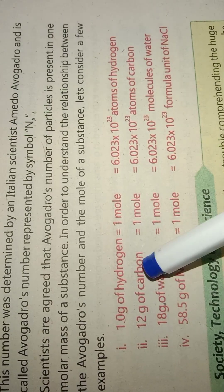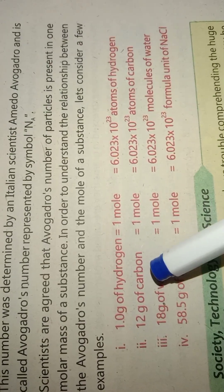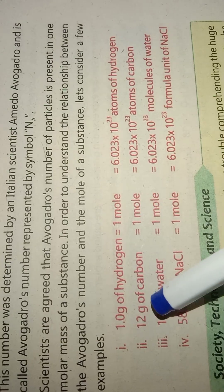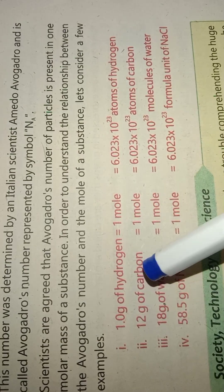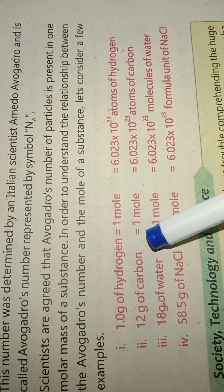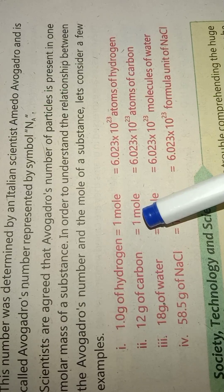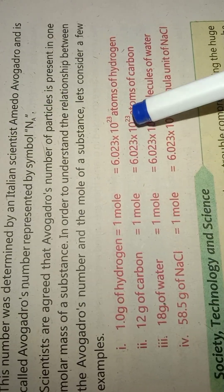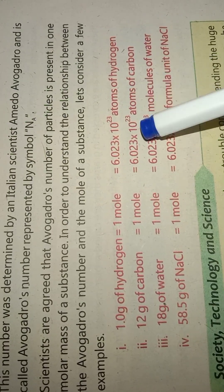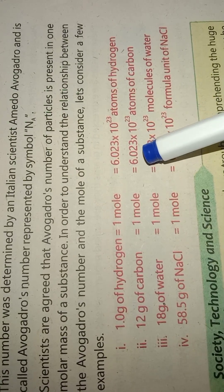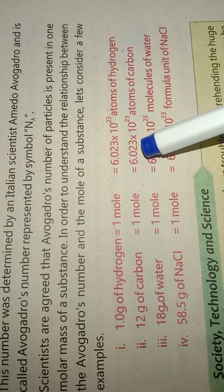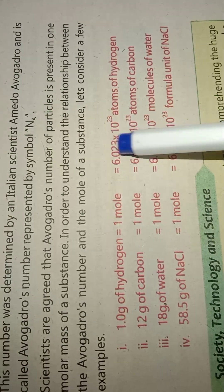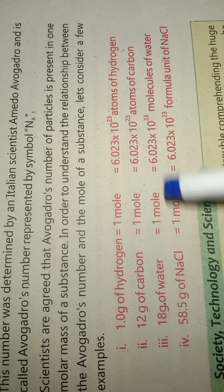For 12 grams of carbon, the number equals 1 mole. This gives 6.023 multiplied by 10 to the power 23 atoms of carbon.